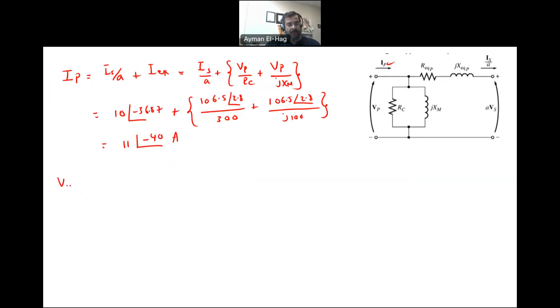Second, we want to find the voltage regulation. The voltage regulation is V no load minus V full load divided by V full load. But my V no load is the VP. My V full load is AVs divided by AVs. We have all the values. Here, we just take the magnitude. It's 106.5 for my VP minus 100 divided by 100. And to make this as a percentage, you multiply by 100. This will give me 6.5%.